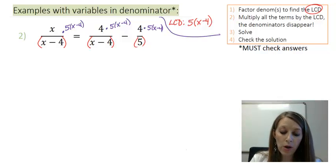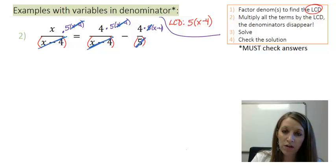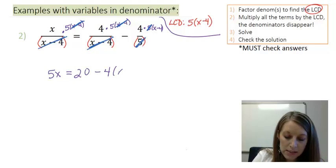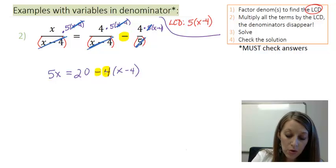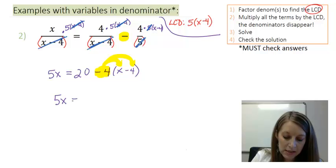This saves a lot of work because now I can start canceling. In the first fraction, the x minus 4 factors cancel. In the second fraction, the x minus 4 factors cancel. In the last fraction, the 5 over 5 cancels. So I have 5 times x equal to 4 times 5, or 20, minus 4 times the quantity x minus 4. I am not multiplying this out yet because I need to distribute the subtraction — I must distribute a negative 4 through those parentheses. That leaves me with 5x equals 20 minus 4x plus 16.